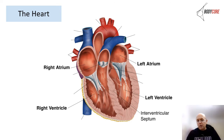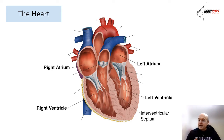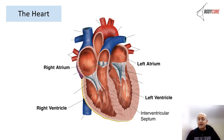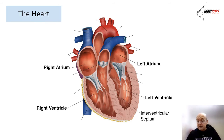You'll notice the muscle on the side of the left ventricle is a lot bigger than on the right. That's because there's a stronger contraction needed to get the blood pumped out of the heart and around the whole body. The right side is pumping blood, but only to the lungs.